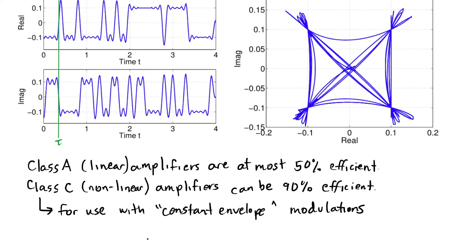And constant envelope modulations have this property that the amplitude being sent is almost the same at all points in time. Now the envelope is the distance from the origin. So in this plot, it's this distance here. This is called the envelope. As long as that stays about the same, you can call your modulation a constant envelope modulation.